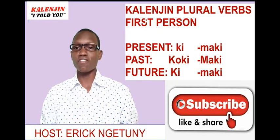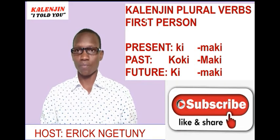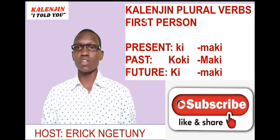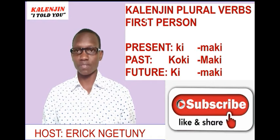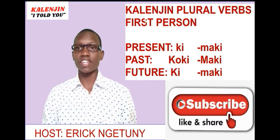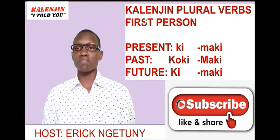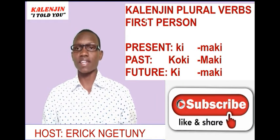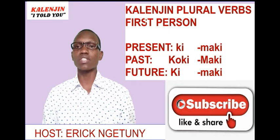Then for the first person past tense, it is going to take Ko Ki. For instance, we were crying — that is the past tense — so it's going to take Ko Ki Rissoti. Then for the negative part of it, which means we were not crying, it will take Ma Ki. Ma Ki Rissoti, which means we were not crying.